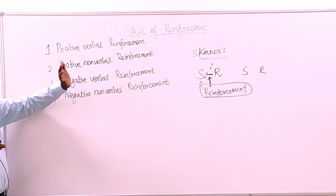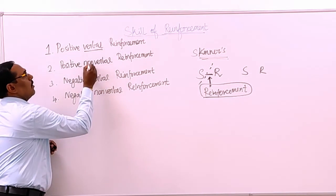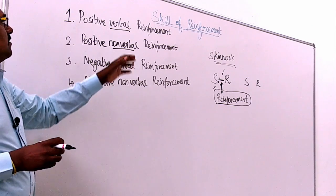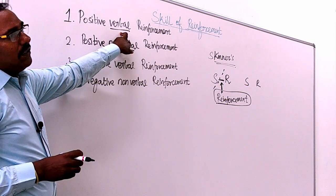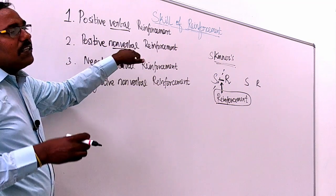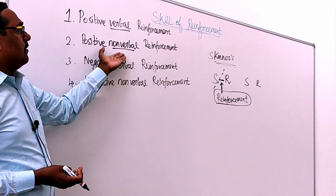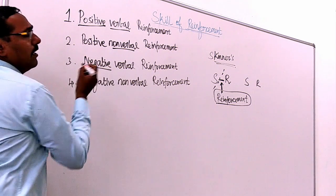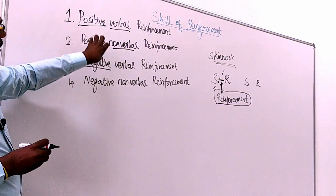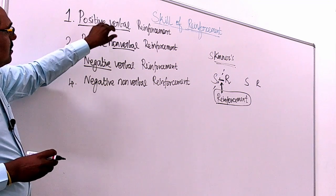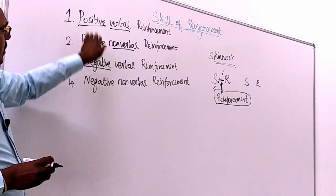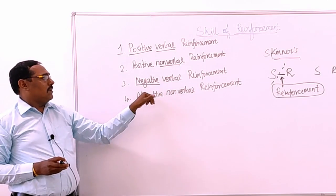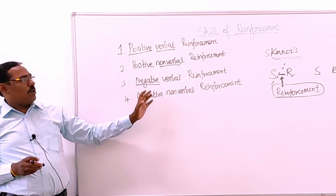Generally, there are two categories. One depends upon verbal and non-verbal. If you use words to motivate, that is called verbal. Instead of using words, if you use gestures, that is called non-verbal. Again, reinforcement is divided into another type: positive and negative. Based on these two categories — verbal/non-verbal and positive/negative — we have four types: positive verbal, positive non-verbal, negative verbal, and negative non-verbal. These are the combinations — permutation and combination.